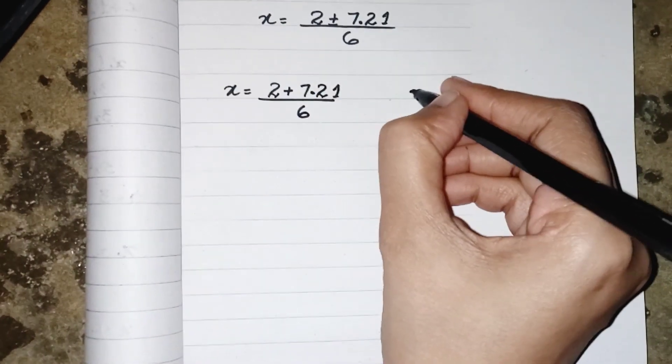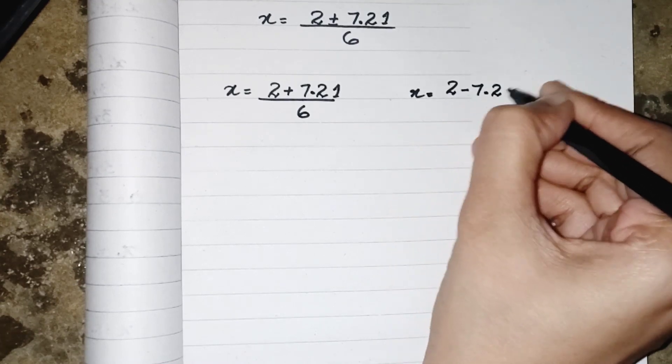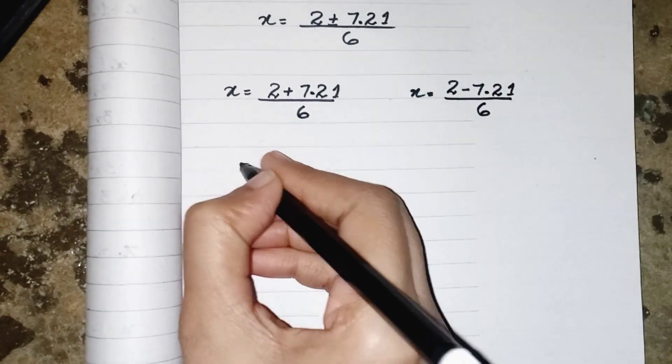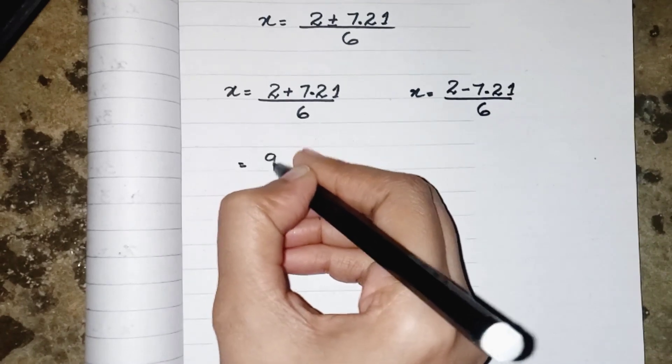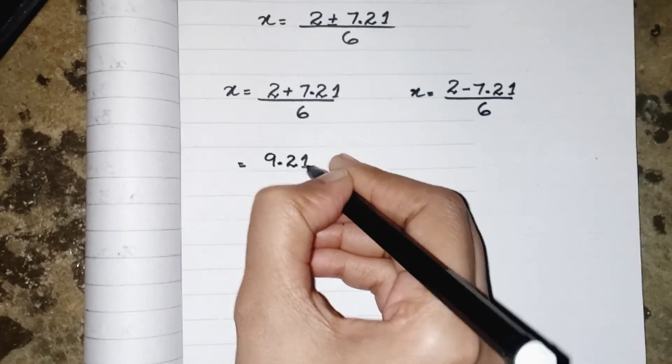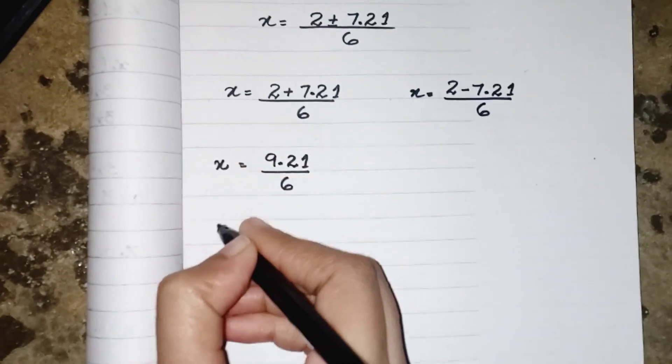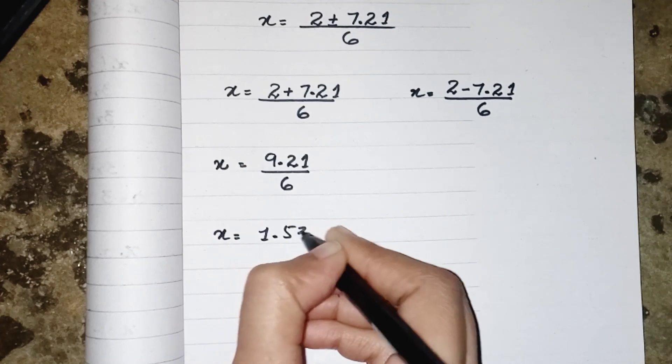and x = (2 - 7.21)/6. When we add 7.21 into 2 will result as 9.21 divided by 6 and then we have answer after division 1.53.